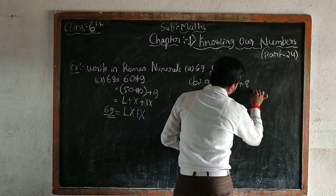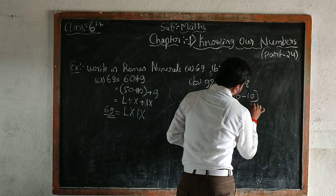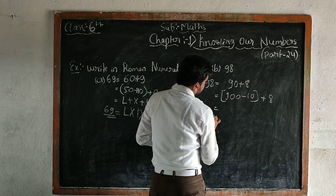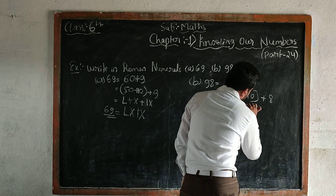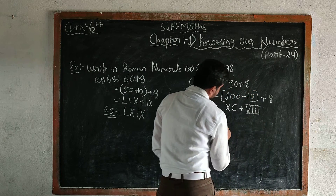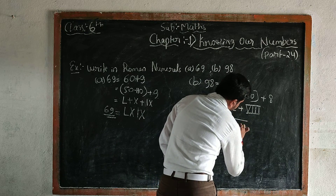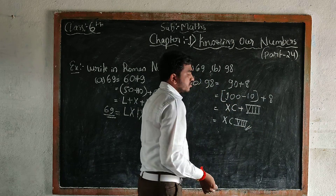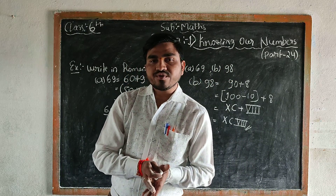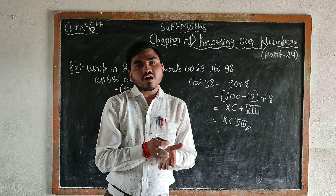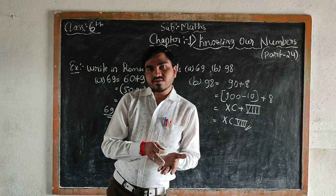For 99: that means 100 minus 10 plus 9 — so 90 plus 9. For 98: 100 minus 10 is 90, plus 8, giving 98. Your chapter on knowing our numbers is fully completed. You should write the homework and submit it this week. Thank you.